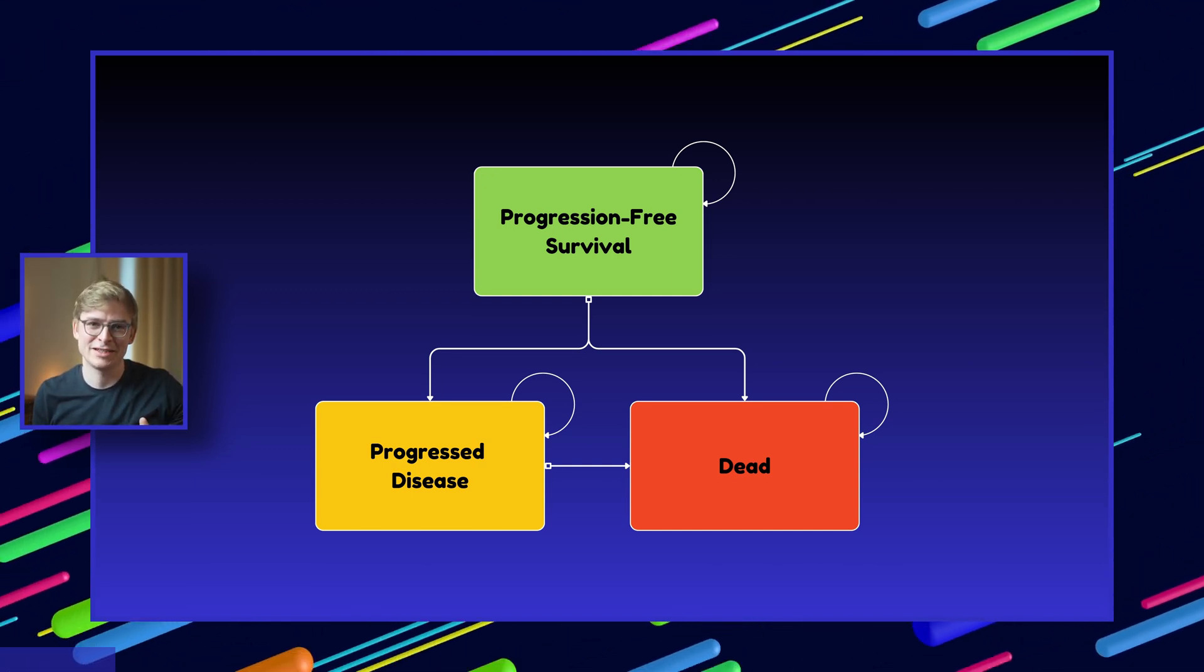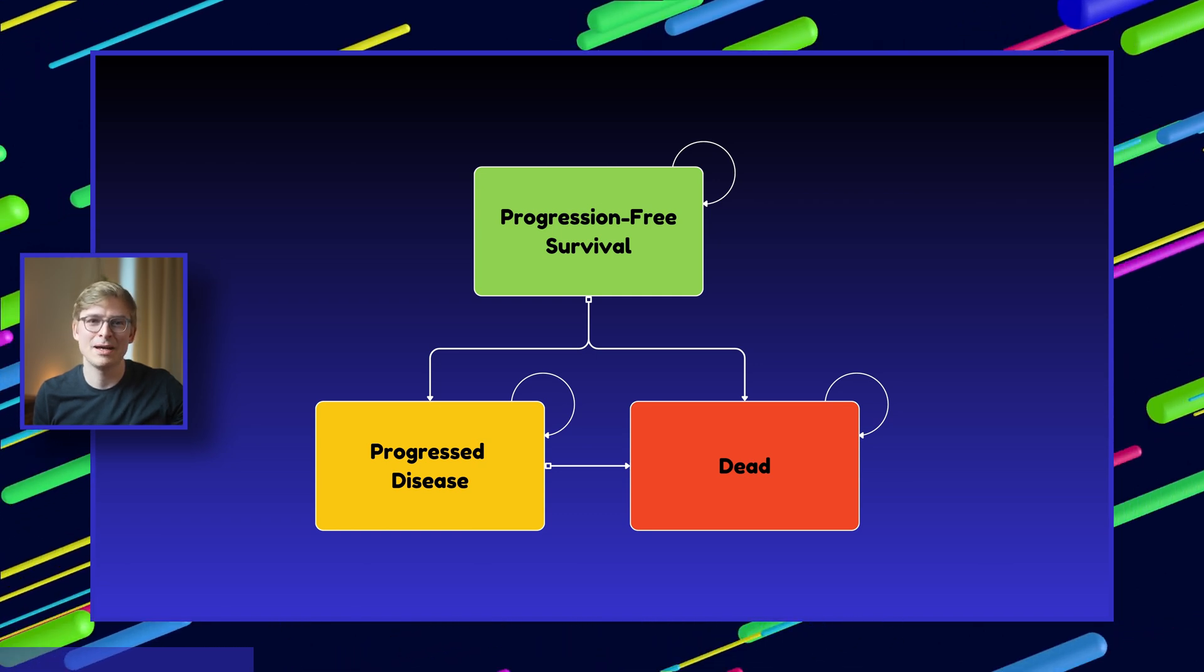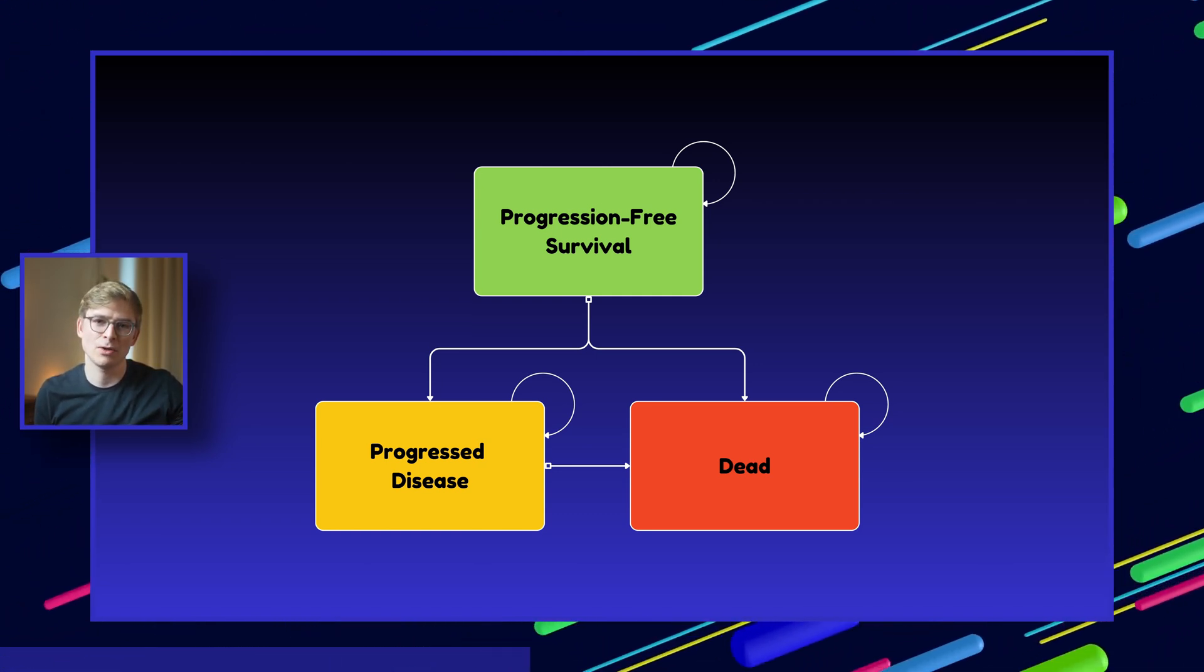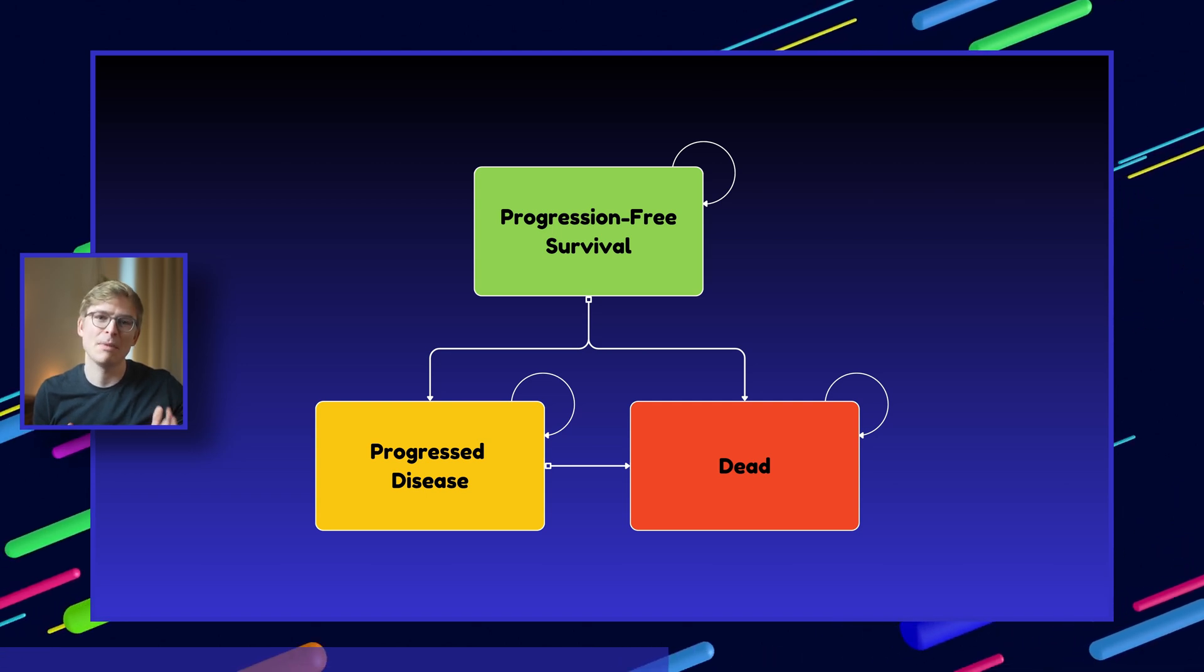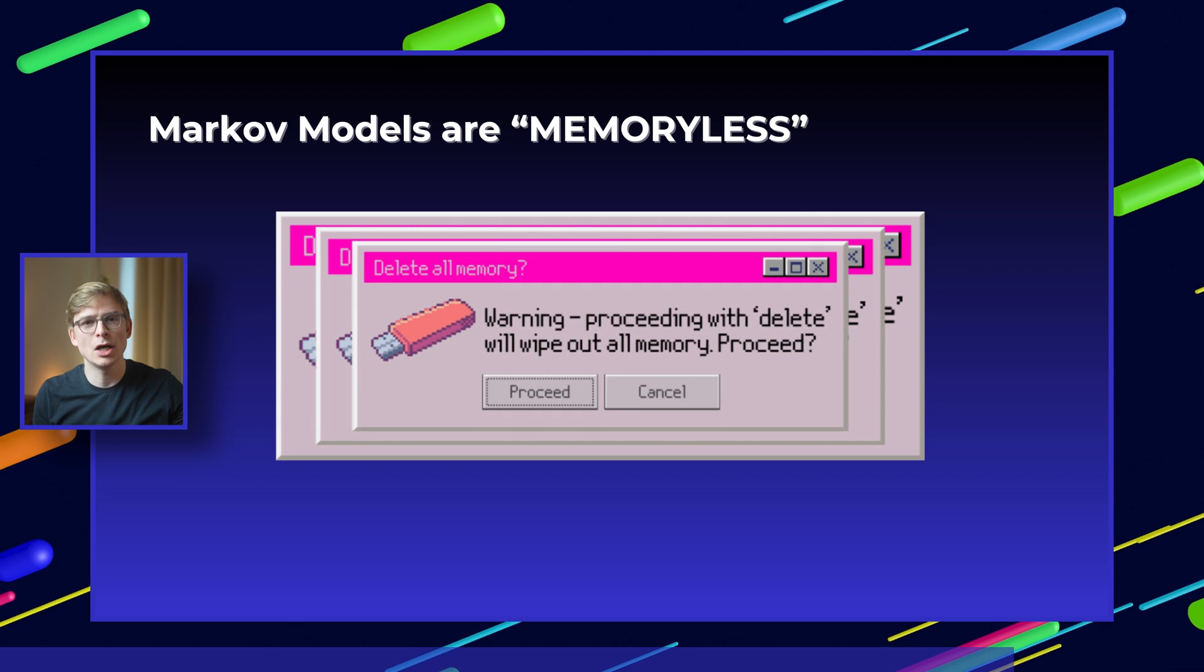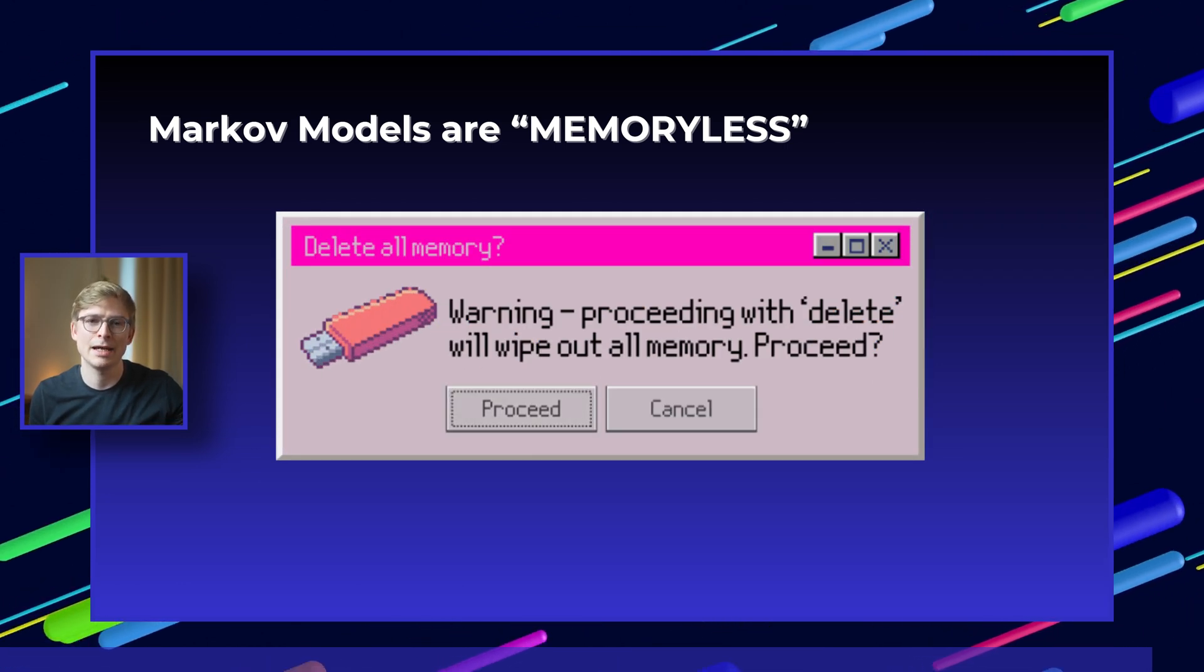Now here's where it gets interesting. Markov models assume that transitions depend only on the current state, not on how the patients got there. This is known as the memoryless property, meaning that the model doesn't remember the patient's past journey. It only cares about where they are right now.